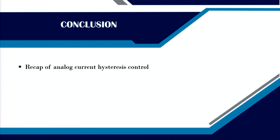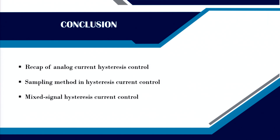In summary, we have recapitulated the analog hysteresis control method, discussed event-based sampling in hysteresis current control, and discussed mixed-signal hysteresis current mode control implementation. There are other structures like fully digital hysteresis control, but these are more advanced research topics. Understanding the mixed-signal implementation will be the starting point, and we will implement it in MATLAB.